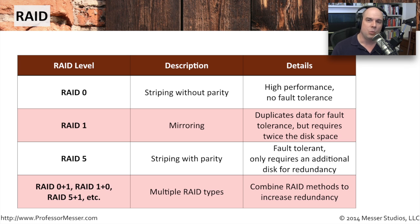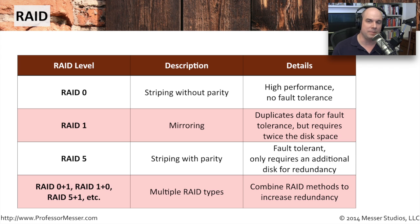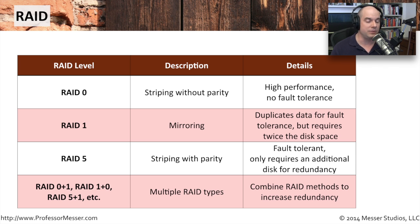RAID 1 is mirroring, where data is exactly duplicated across multiple disks. If I have a 2TB disk, I'll have a duplicate 2TB disk with exactly the same information, so if I lose the first disk, the system continues to run. RAID 5 is similar to RAID 0 in that it uses striping, but it includes an extra drive for parity data. This means if I lose any of those drives, I can still fault-tolerantly retrieve all of the data, without needing exact duplicates as in RAID 1, providing efficiencies in storage.